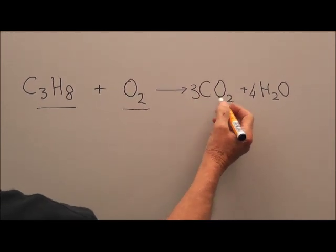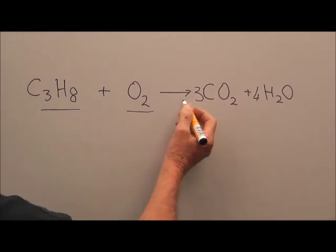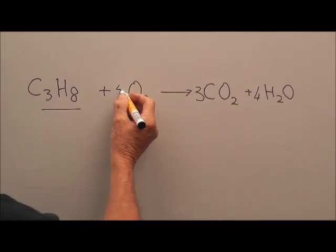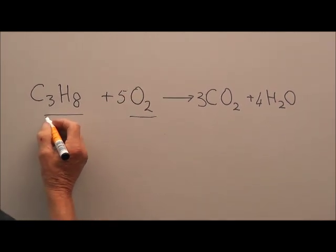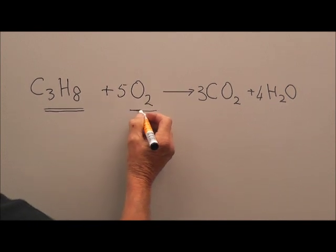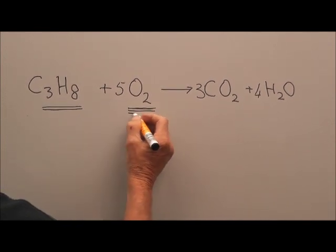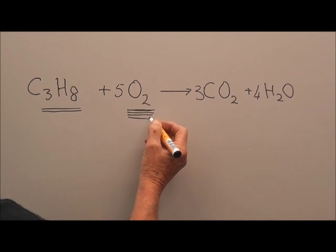Now there are three lots of two oxygens there, that's six, and another four. So that's ten altogether on this side. We only have two here, so we put a five in place there. So what that tells us now is that to react propane according to this equation, we've got to put in five times as much oxygen. So we'll try that now in our final experiment.